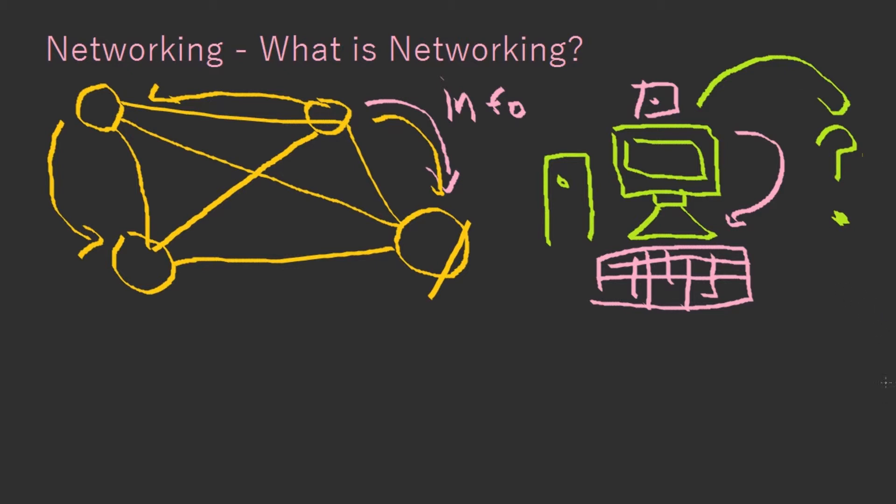Basically, the earliest communication between two computers was in 1940, where this guy called George Stibitz sent instructions from this place in New Hampshire to another 270 miles away, and that was in New York. That was one of the first networking things that ever happened.